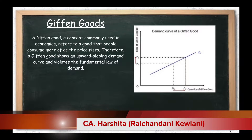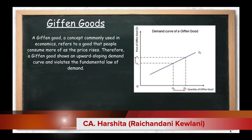Now I would like to recall one more concept that has a very important effect on Giffen Goods — the income effect. What is the income effect? When the price of a product increases, say from 10 to 20 rupees, and you had 100 rupees before and could buy 10 products, now you can only buy 5. The consumer's purchasing capacity falls — from 10 to 5 goods. That is the income effect. Conversely, when the price falls, your purchasing power increases and you can buy more.